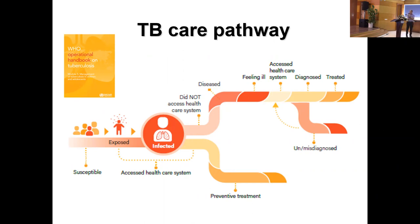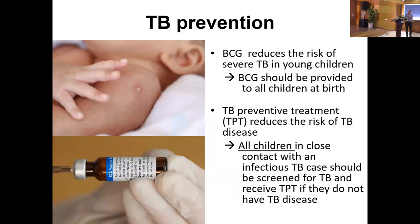This pathway shows the continuum of care for TB patients: from exposure, to infection, to disease manifestation, to treatment, and then prevention. The prevention mechanisms we have are BCG and preventive therapy. BCG is given in Vietnam in the community within the first month of life — in most parts of the world it's given in the labor ward just after delivery. BCG provides some protection against severe disseminated forms of TB, but not complete protection.